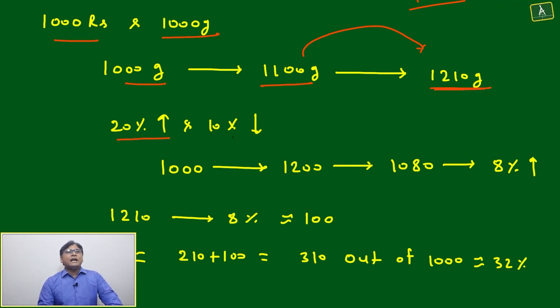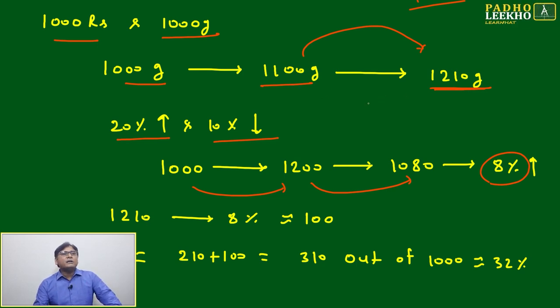How can you say this? 20% up and 10% down means 1000 rupees goes to 1200, then comes to 1080 - that's 8%. Again 1210 - like here, 1100. Here it will become 900 grams, and the remaining he will sell, so combined it will come to 1210 grams.